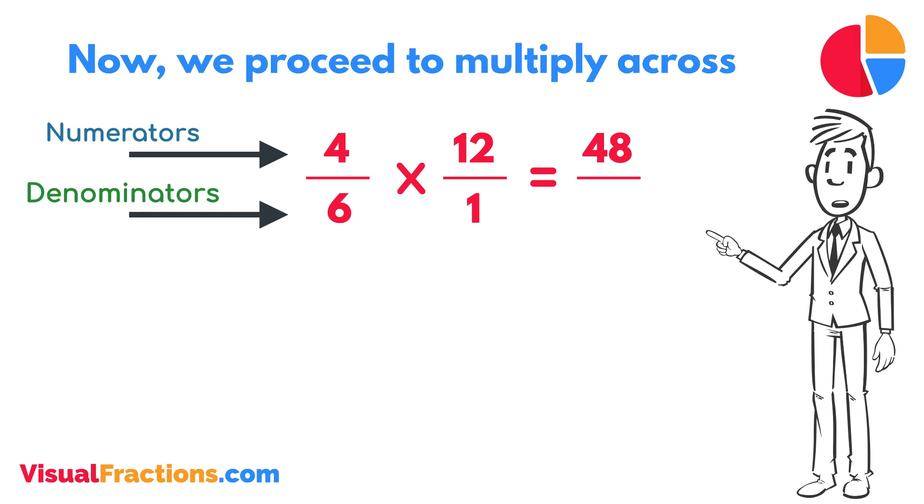Next, multiply the denominators: 1 times 6 equals 6. We now have a new fraction, 48 sixths.